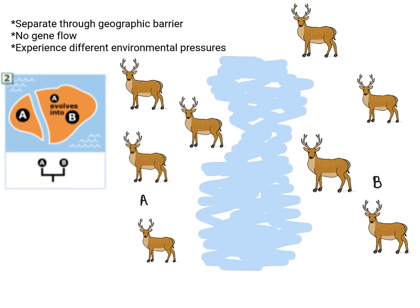This separates our population into two populations: population A on one side of the ocean and population B on the other side. Now this is important — they're still the same species. In order for these populations to potentially become different species, besides the geographical barrier we also need no gene flow. That means individuals from population A cannot reproduce with individuals from population B — they can't get across the water or cover the geographical barrier. So everyone in population A continues to reproduce with each other, and everyone in population B reproduces only within population B.